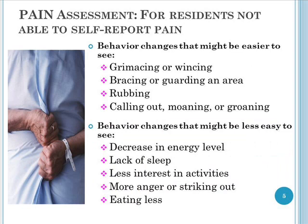For residents not able to self-report, there are specific behaviors that are common when people experience pain, and these are easier to identify and see — such as grimacing or wincing, grabbing or bracing, guarding an area that's painful, rubbing an area that's hurting, or calling out, groaning, moaning, or crying. When we see these behaviors, it's pretty easy to think that this person is probably hurting or having pain.